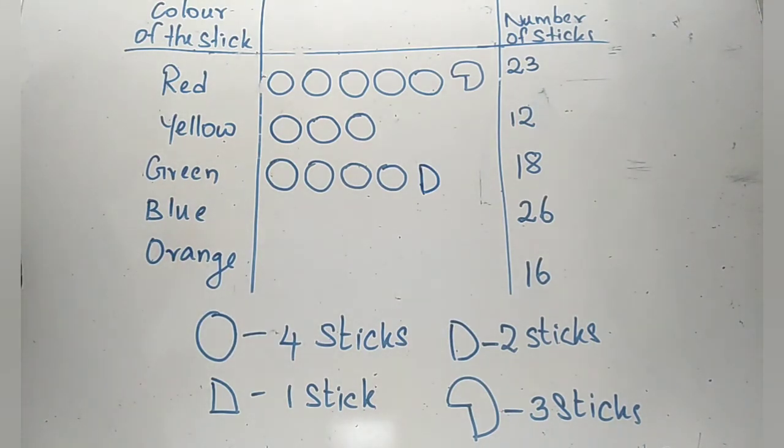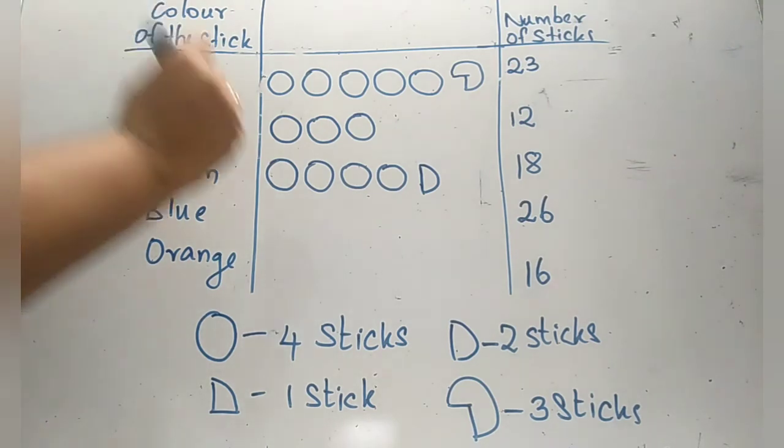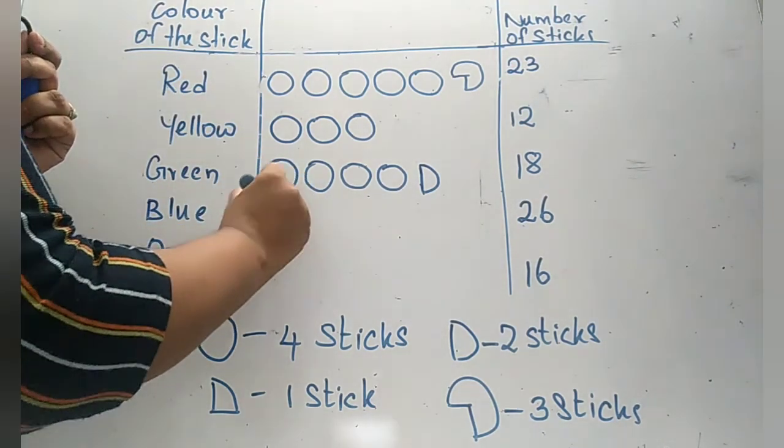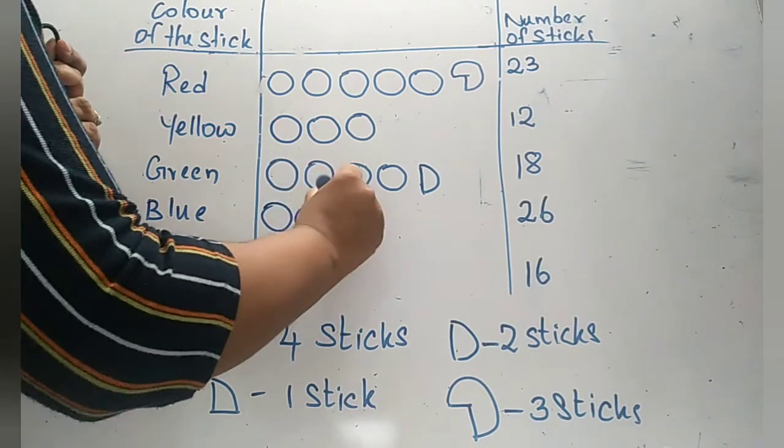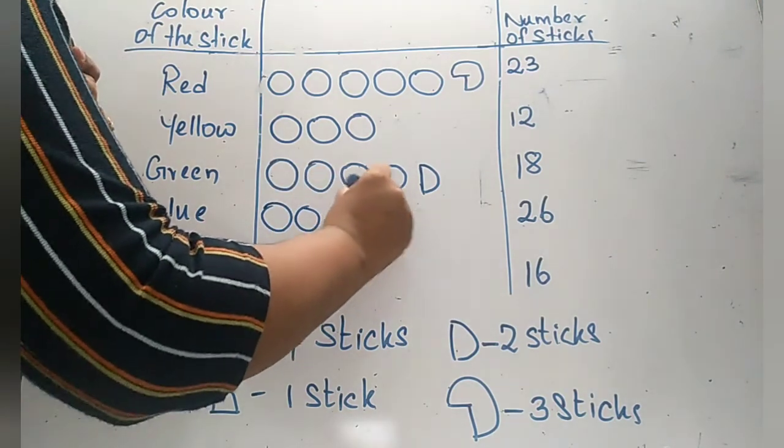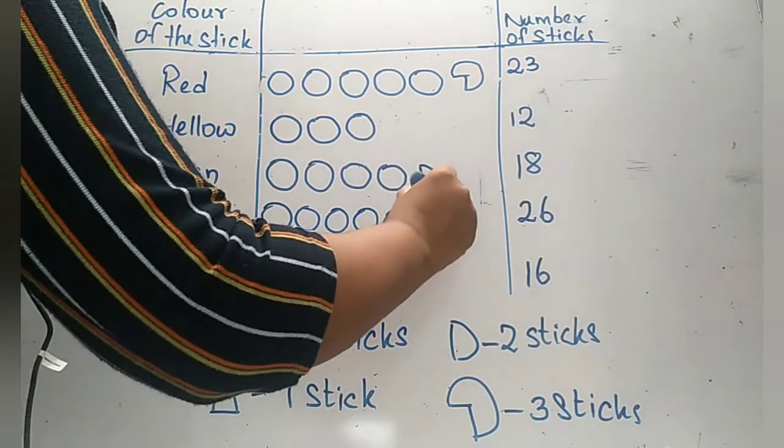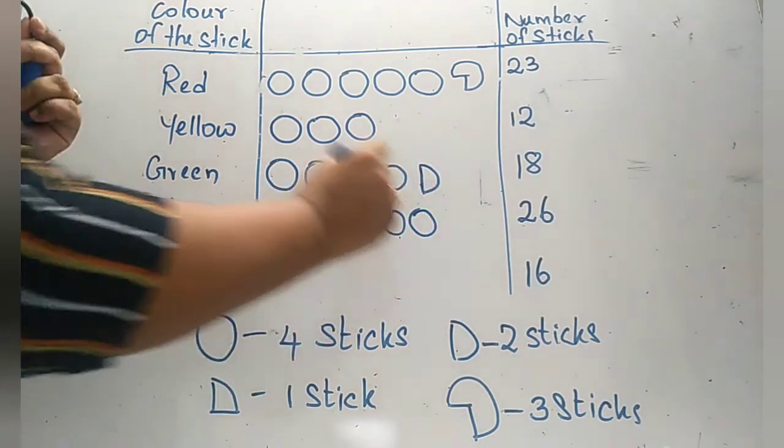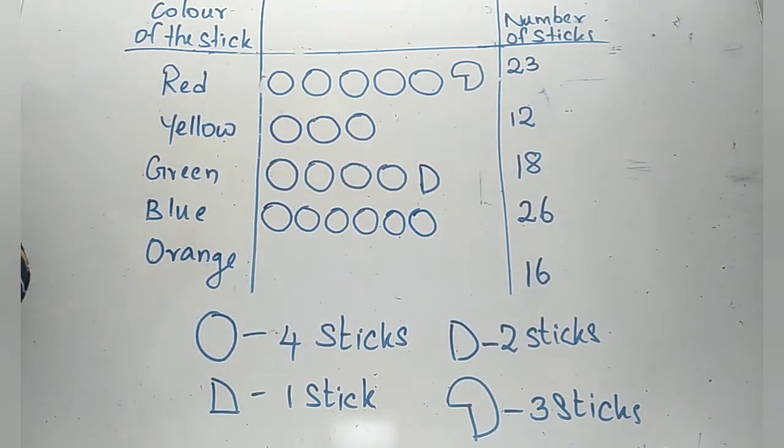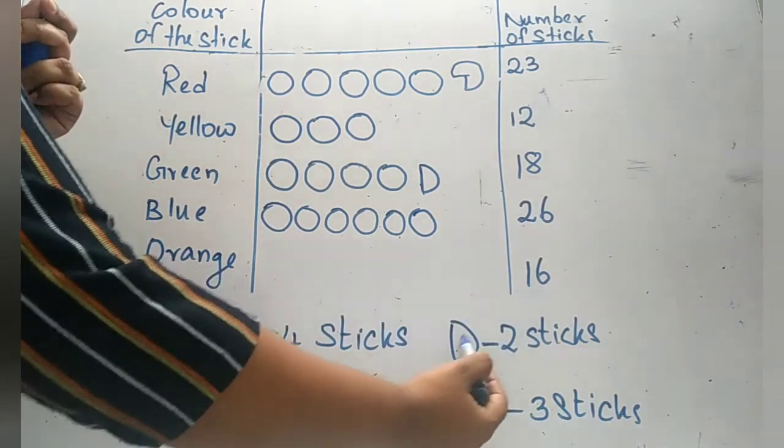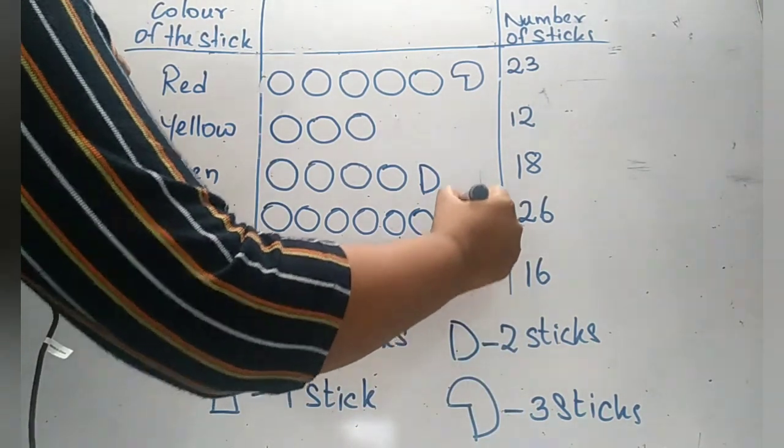Now the next one is twenty-six. This is also not a multiple of four. Let's represent four times six, twenty-four first. We need six circles. One, two, three, four, five, six. Four times six is twenty-four. We need two more, so two can be denoted with the semicircle.